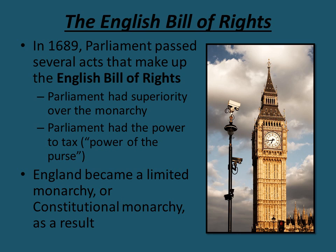In 1689, to assert Parliament's power once and for all, Parliament passed a series of acts that became known as the English Bill of Rights, which asserted Parliament's power over the Crown in England.